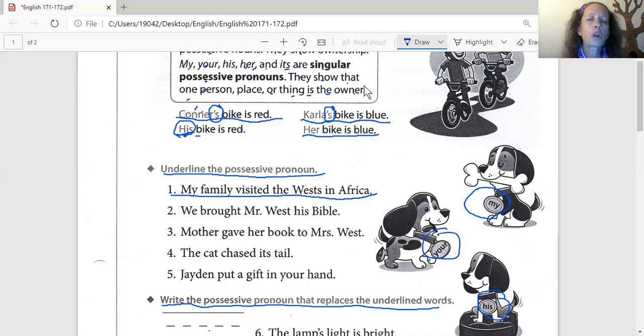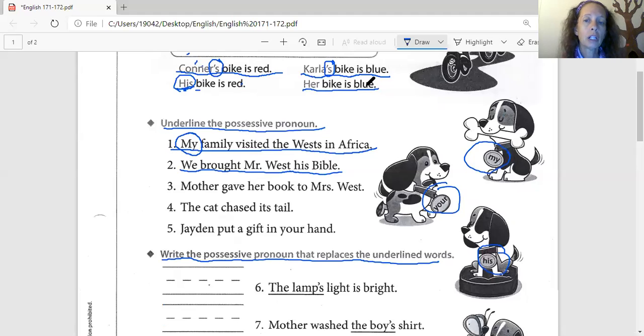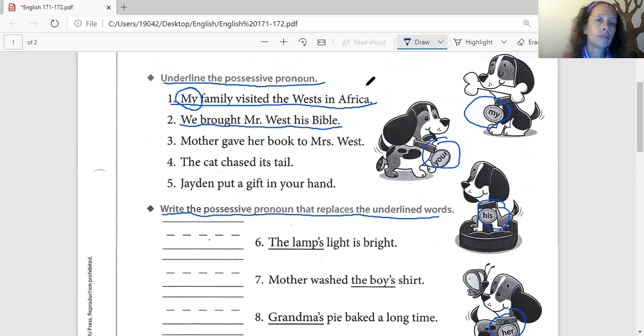So, on number one, which of these words is on the dog collars? Kylie. Mine. Mine. That's right. She got it. Thanks, Kylie. And number two, Jamia. Ready? We. We. We. Brought. Mr. West. His. Bible. Mm-hmm. Which of these words is on the dog collar? Oh. Jamia. Yes. Look and find the word that's on the dog collar. It goes over here. Brianna, do you see it? Yeah. What is it? His. There you go. Circle it. Austin. Put them away right now. Put them away. And number. It's his is what we're circling there.